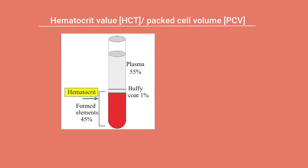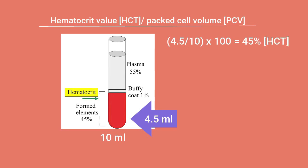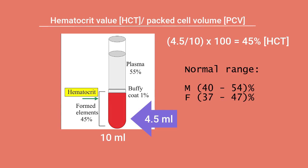For example, if a test tube contains 10 ml of blood and the volume of the packed RBC at the bottom is 4.5 ml, then in percentage form the RBC represents 45% of the total blood — and this is the hematocrit value. Normal hematocrit or packed cell volume ranges from 40 to 54% for males and 37 to 47% for females.